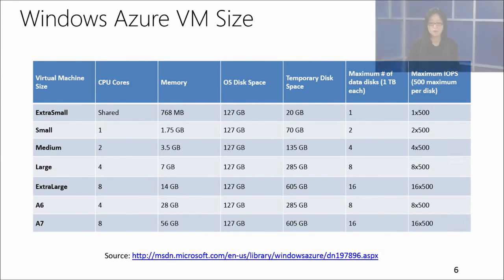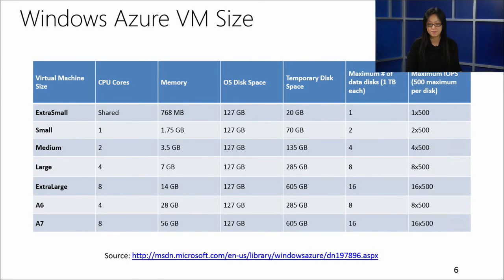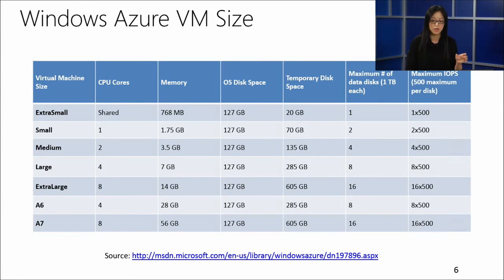The last column shows how much IOPS you can actually expect — this is an upper limit that Windows Azure enforces per disk. It's not a guaranteed minimum. This is useful when doing your VM sizing and capacity provisioning exercises.